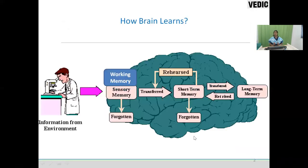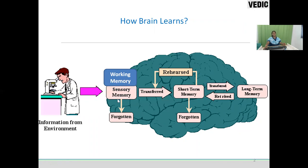Let us start with how the brain learns. The brain starts receiving information from the environment and starts assimilating or absorbing the information through five different sensors: eyes, nose, mouth, ears, and kinesthetic touch — by doing things with their hands, by pedaling something with their legs. Any information received from the sensory signals starts loading in the sensory memory.